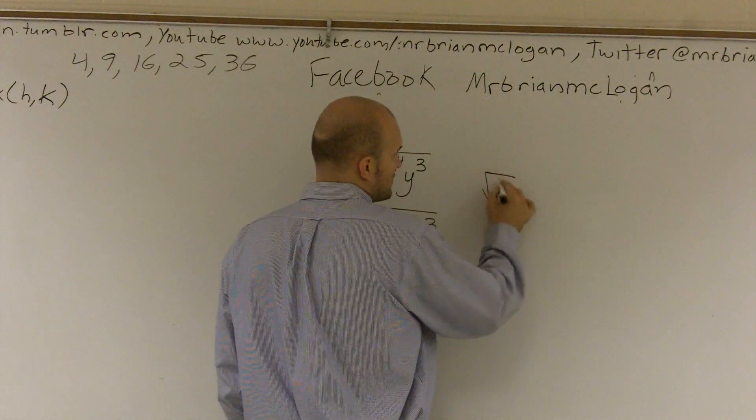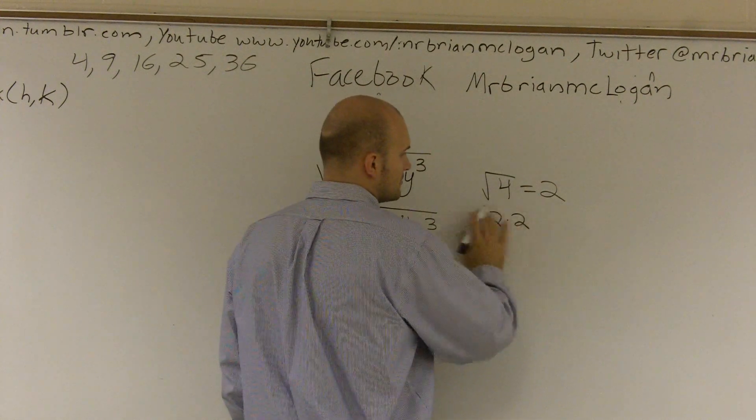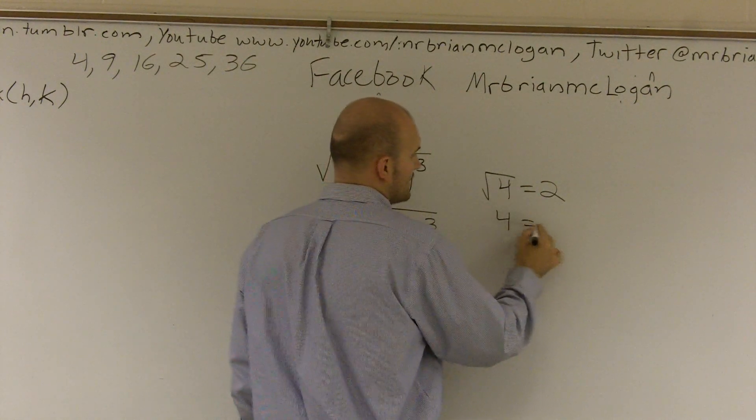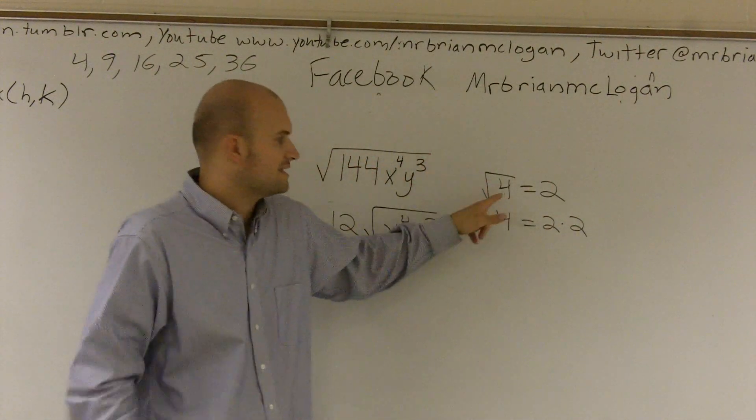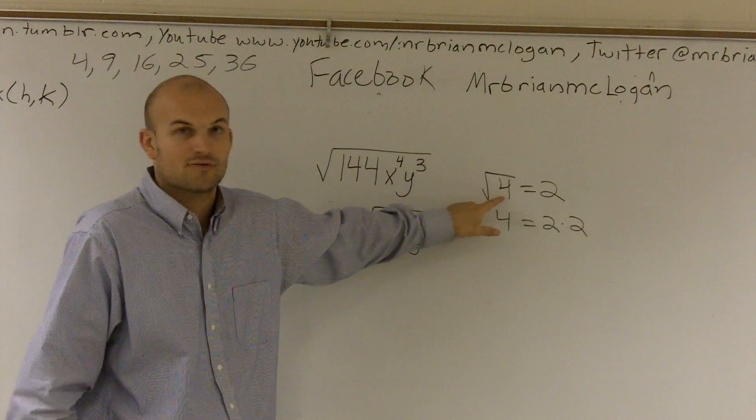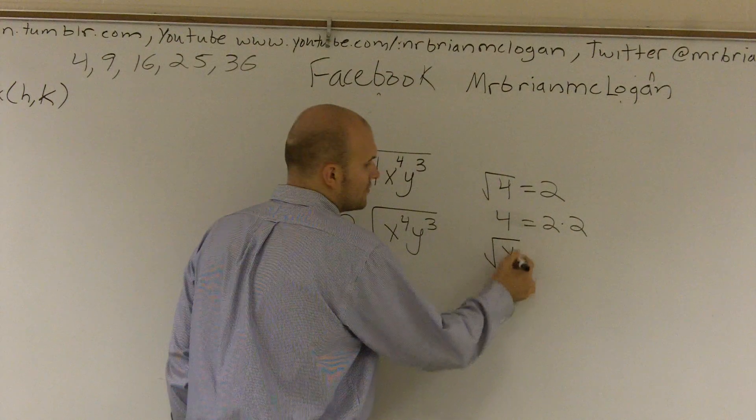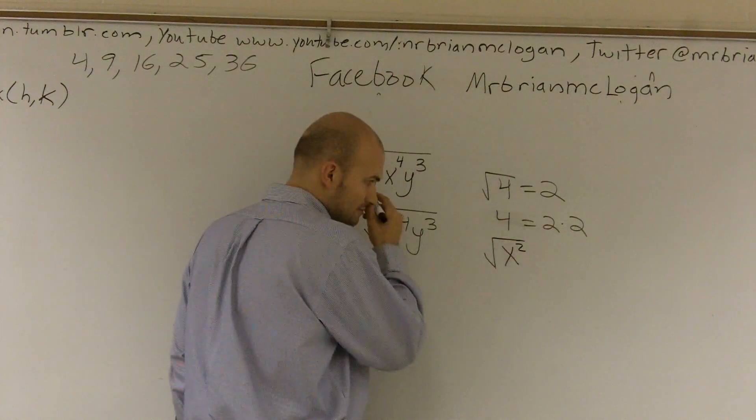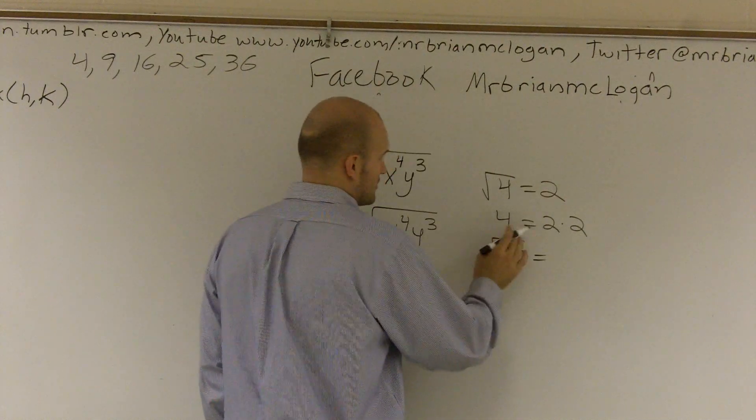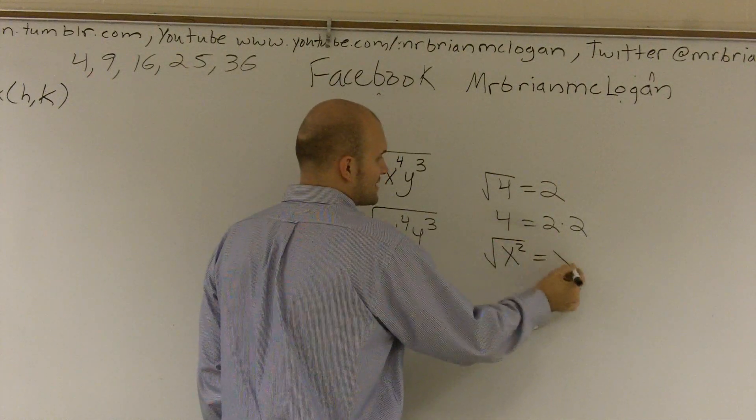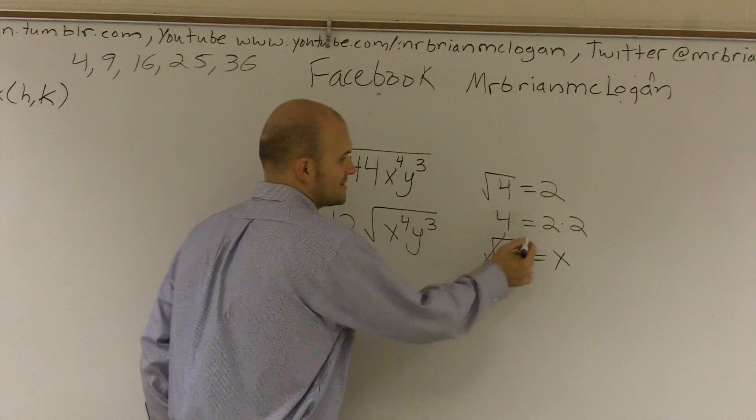If I say the square root of 4, I know that equals 2. The reason why is 4 equals 2 times 2. Because remember, what the square root says is what two numbers multiply to give me my radicand, or my number inside the root. So if I said the square root of x squared, we know that the square root of x squared is going to give me x. What's happening is that these two are canceling out.